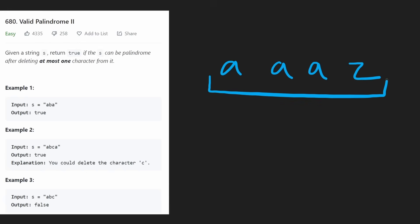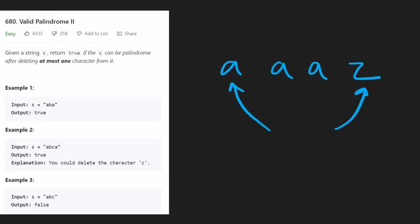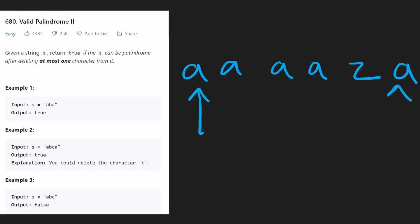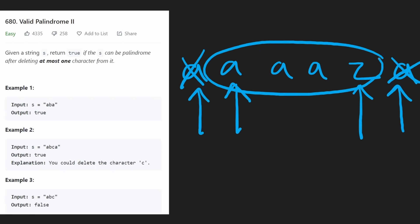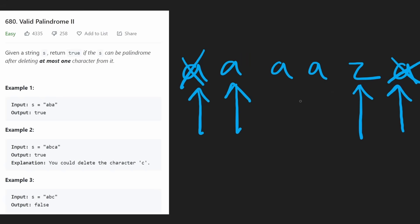It might not always be the case that the two end characters are the ones that are unequal. It could be something like this — initially the two end characters are equal, so we shift our pointers to the next characters and look at the sub-problem. We're never going to have to look at those two characters ever again.